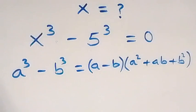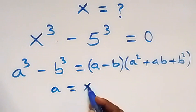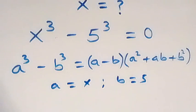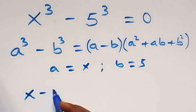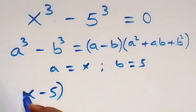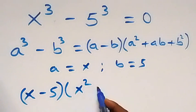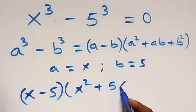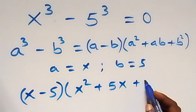Here, a is serving as x, and b is serving as 5. What we have now becomes x minus 5, multiplied by x squared plus x times 5 (that's 5x), plus 5 squared, that's 25.